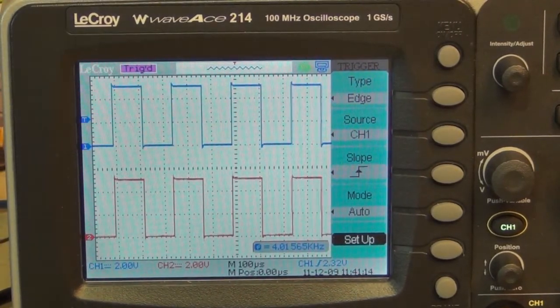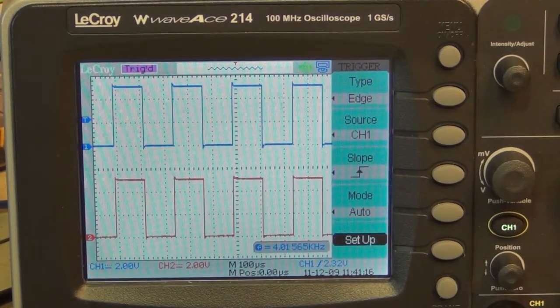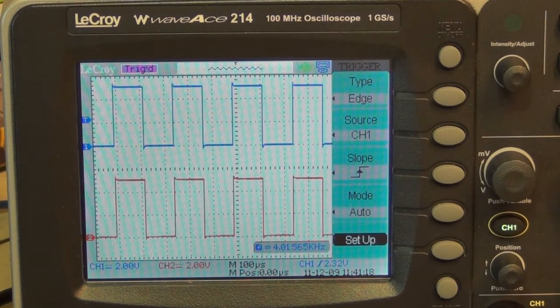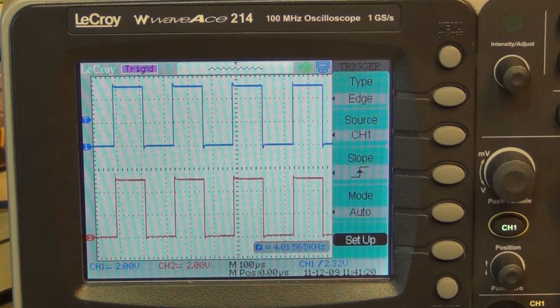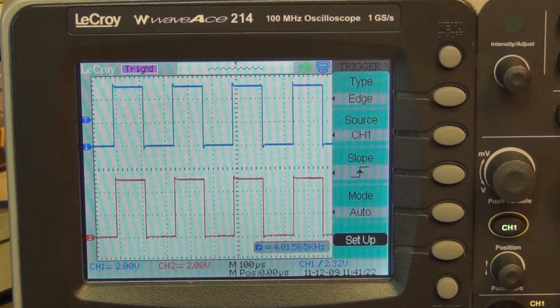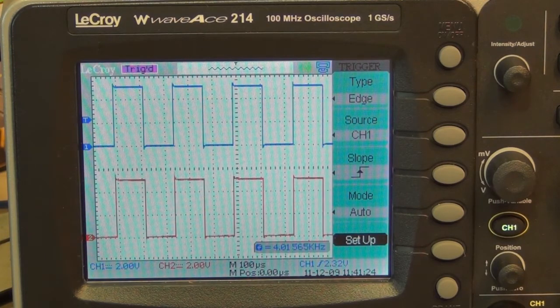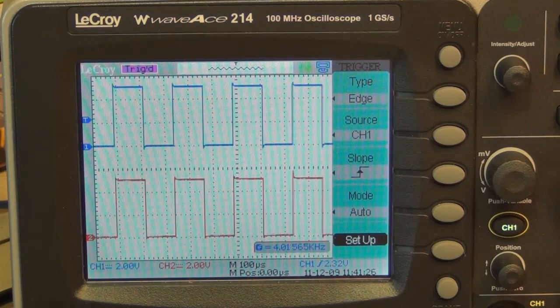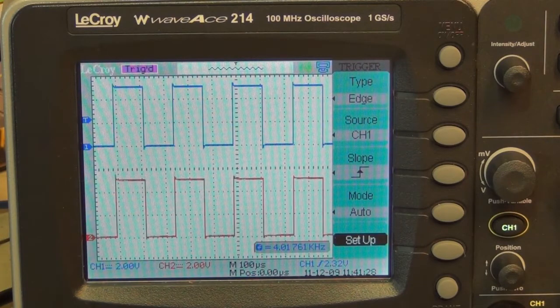On the top in the blue is the input from my SMART Board signal generator. It's a simple square wave, and on the bottom is the output from the ultra-high-speed buffer gate.